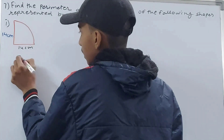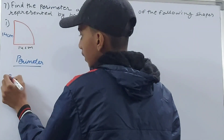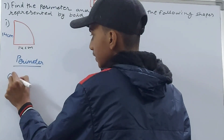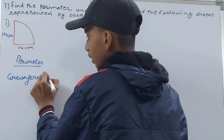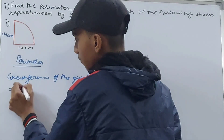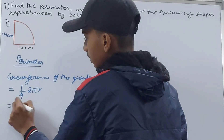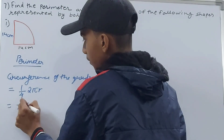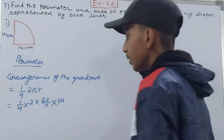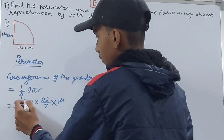For the perimeter, first we will find the circumference of the quadrant. The circumference of the quadrant is (1/4) × 2πr. So: (1/4) × 2 × (22/7) × 14 centimeters.